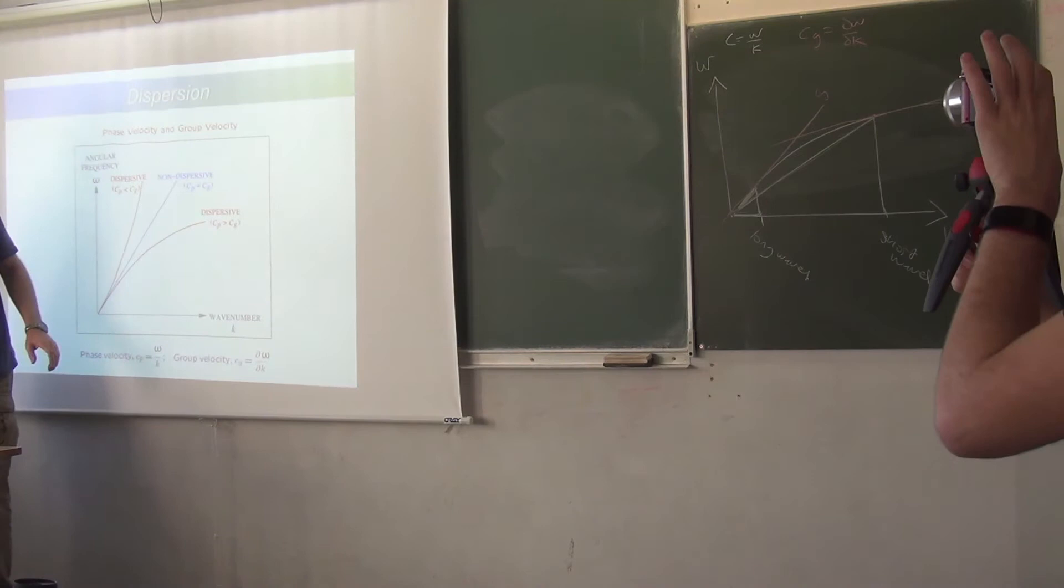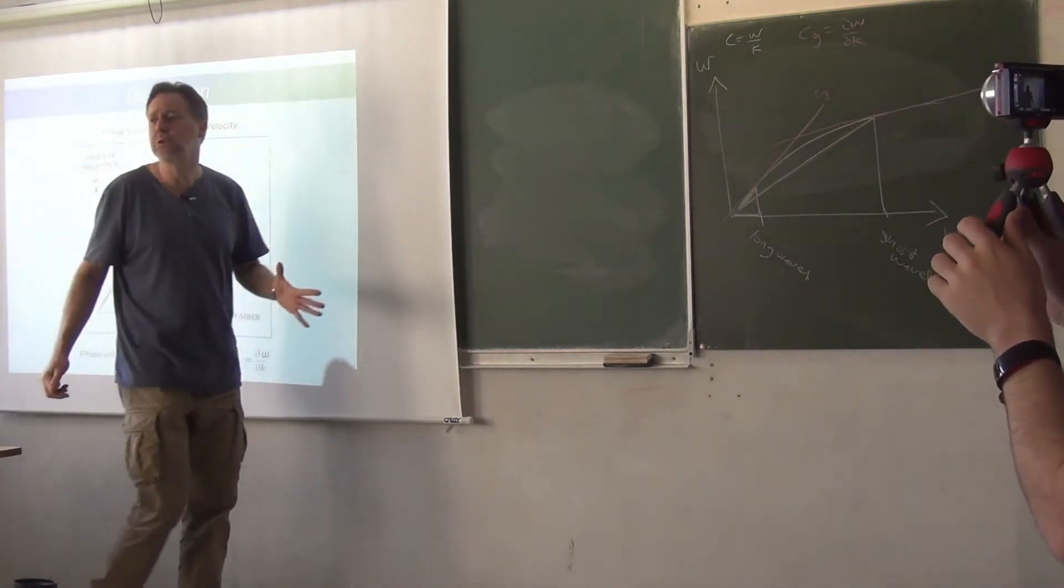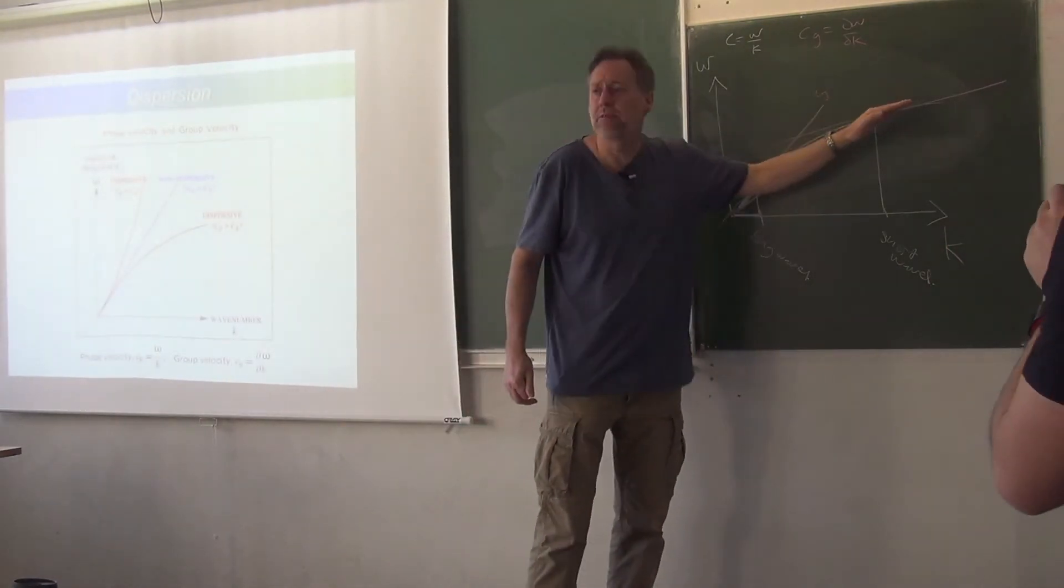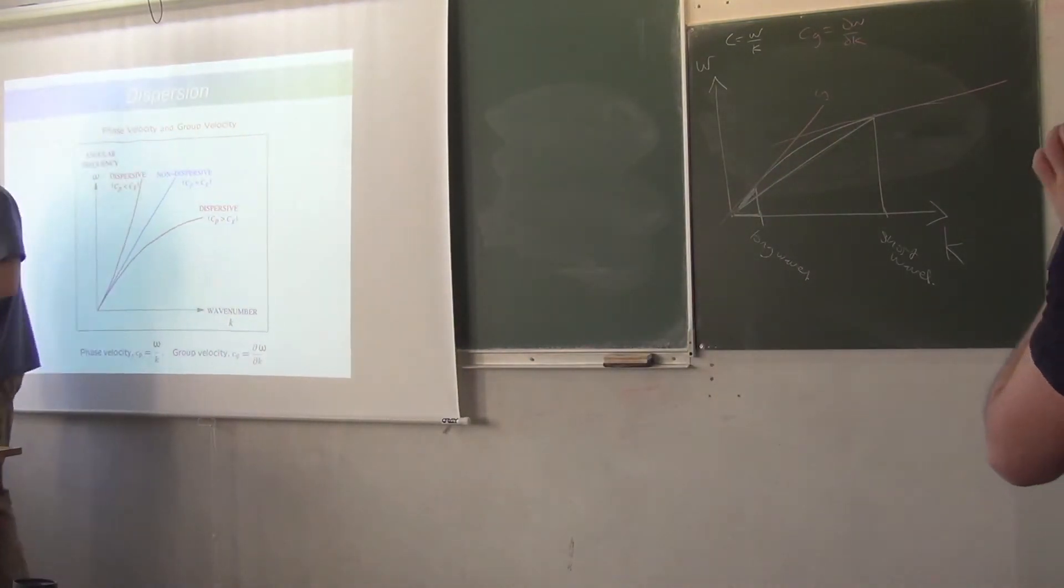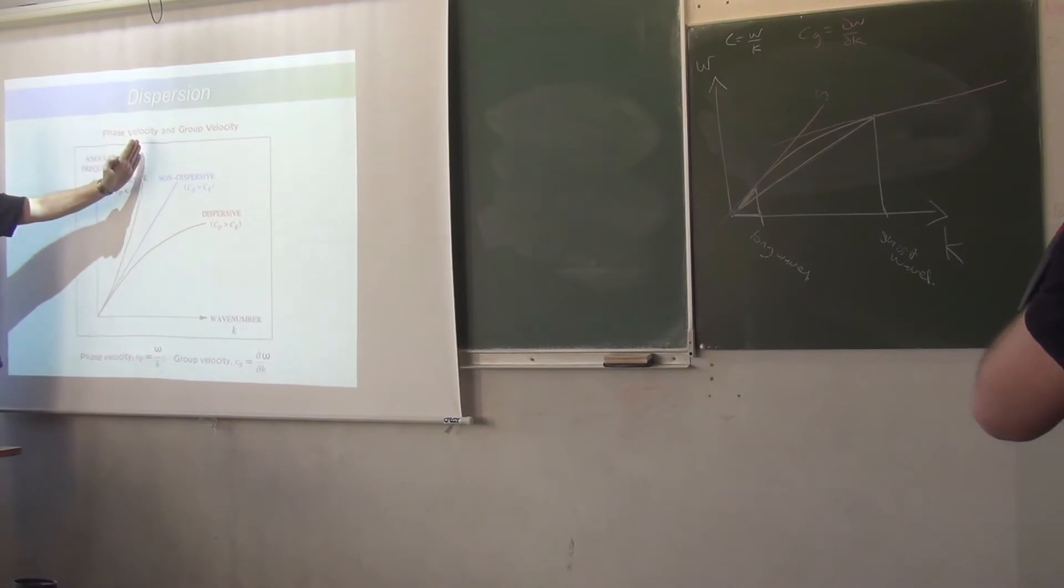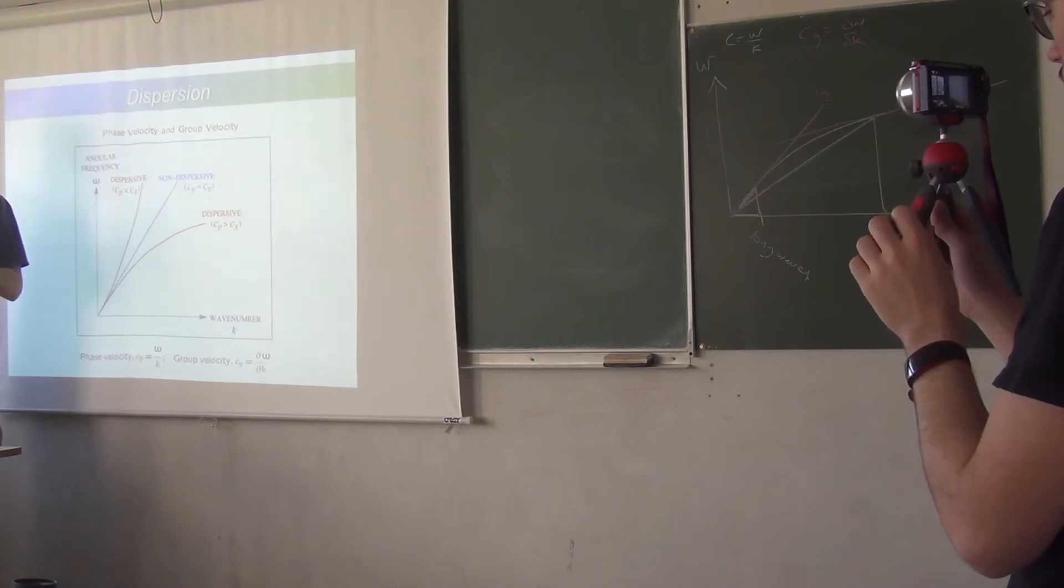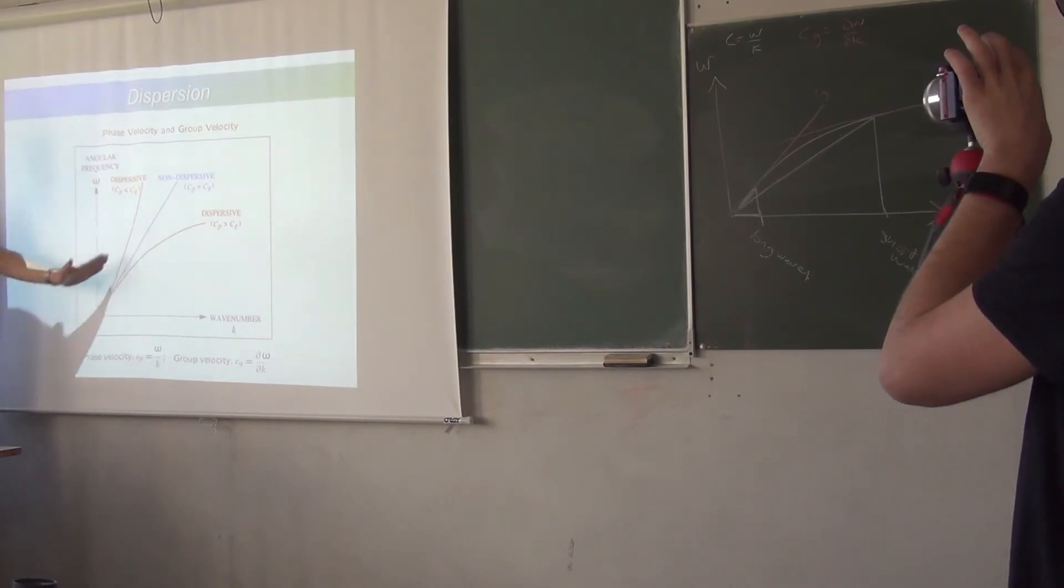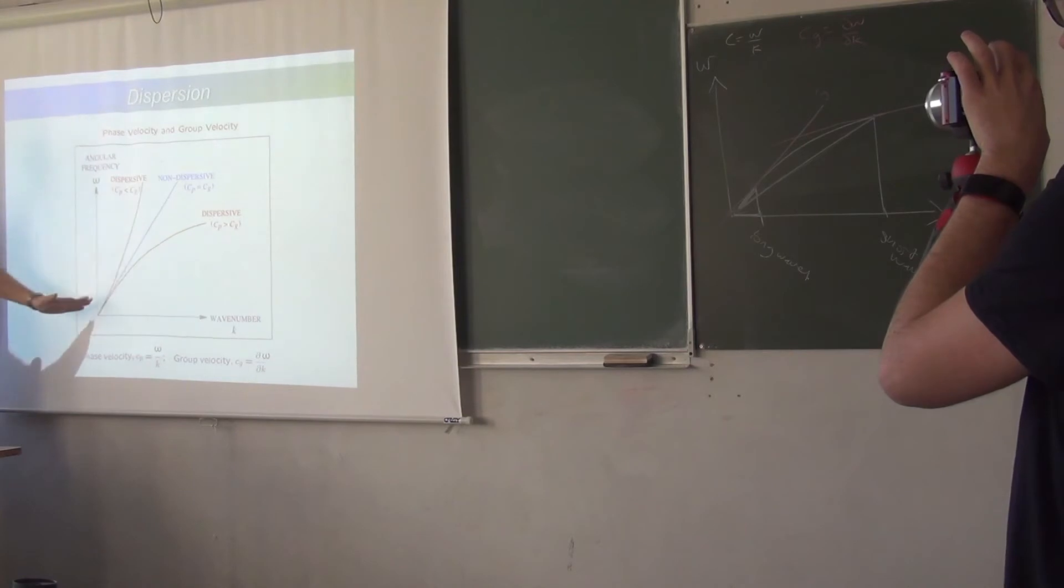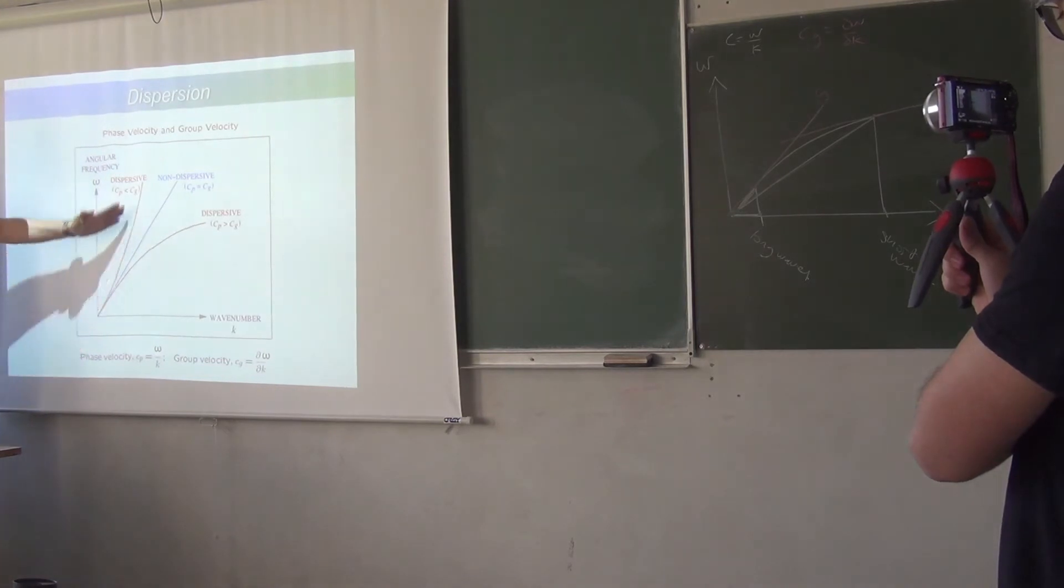So, that's what we call normal dispersion. And in fact, for deep water waves, the group speed is half of the phase speed. There's another kind of dispersion here where the group speed is bigger than the phase speed, so the packets actually go faster than the individual waves. It's quite unusual. Capillary waves, the tiny little ripples that you see on the surface of the water, behave like that, but we're not going to deal with those. For them, the restoring force is surface tension, but that's a bit outside our scope of interest for this course.